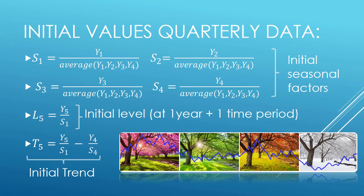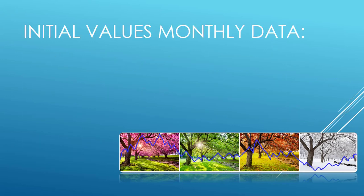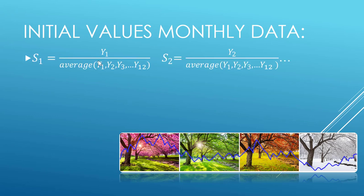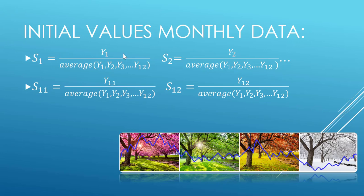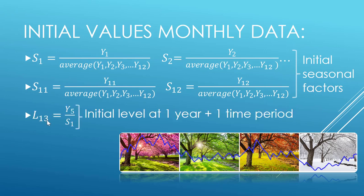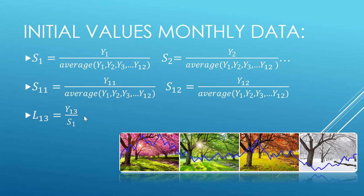Moving on to our initial values for monthly data. Very similar, but now we average to 12 for each. If we want to represent the whole first year, we need to use all 12 months. Quarterly data has four periods in the year, monthly there are 12. So we do seasonal factor 1 all the way through 12, and then our level starts at time period 13 because it's one year plus one time period.